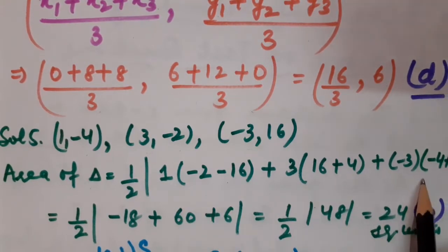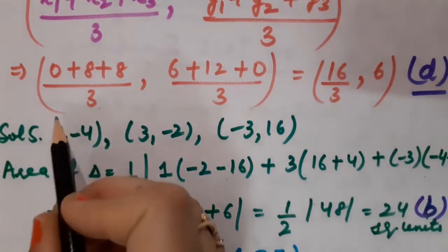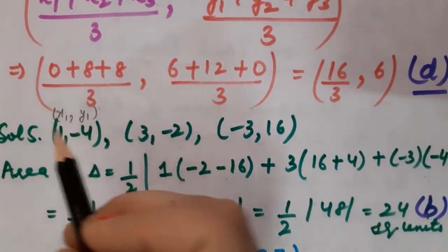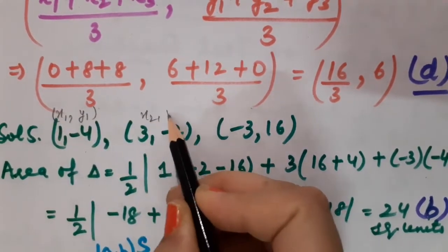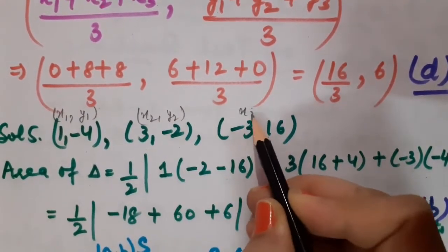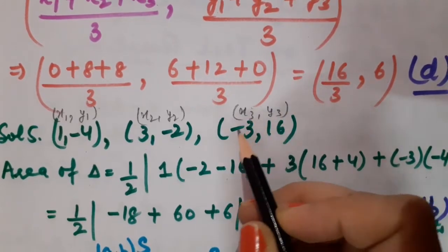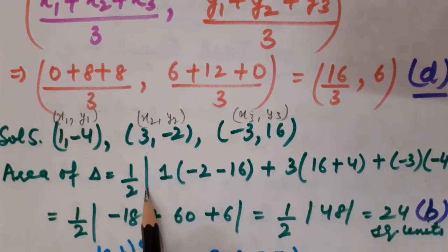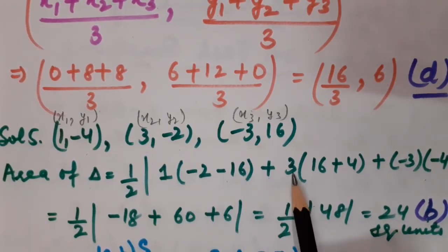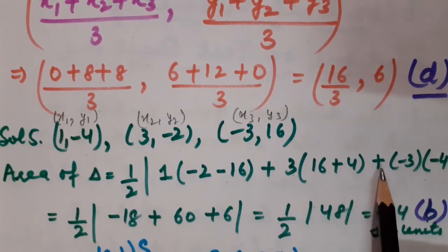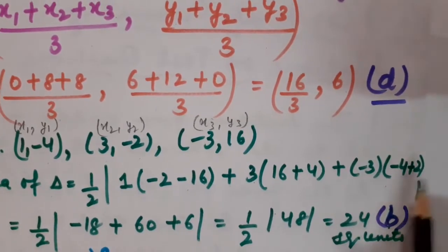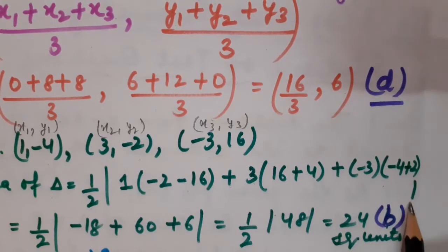Consider the first as (x₁,y₁), second as (x₂,y₂) and third as (x₃,y₃). Substituting: half × |1×(−2−16) + 3×(16+4) + (−3)×(−4+2)|. This becomes half × |1×(−18) + 3×(20) + (−3)×(−2)|.